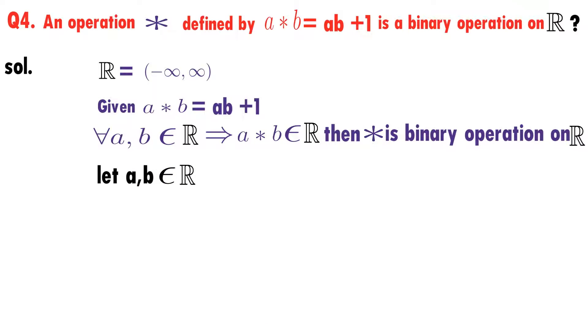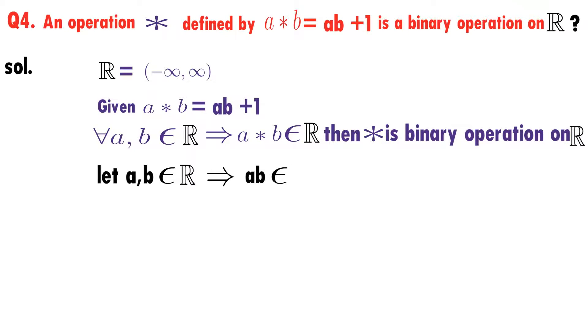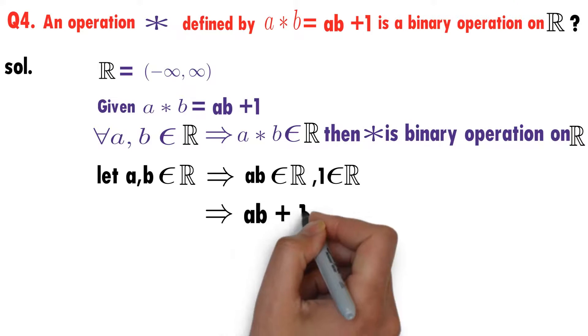a and b. Think of their product. Product of two real numbers is again a real number, so ab is a real number. And we know that 1 is a real number.